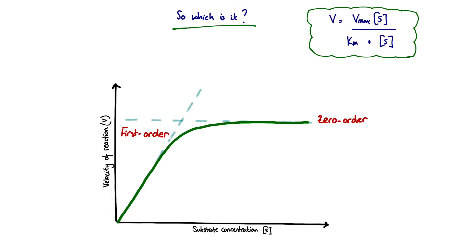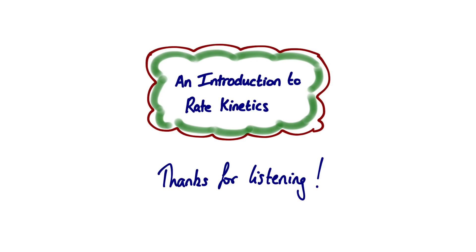For most drugs, the Michaelis constant is high enough — the system is efficient enough — to maintain first order kinetics almost irrespective of the substrate concentration; you'd need unachievably high substrate concentrations to saturate the system. But for certain specific drugs, zero order kinetics is achieved at relatively modest drug concentrations. Examples of this would be ethanol and phenytoin. Thanks for listening, I hope that was useful.